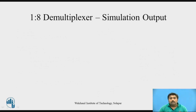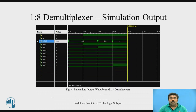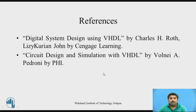This is the simulation output for the 1-to-8 demultiplexer. You can verify it using these waveforms. Depending on the select line, the input is connected to one of the outputs. When the select line is 000 the input is connected to out0. When the input becomes 1, it is reflected at out0 because S is still 000. These waveforms serve as the verification references.